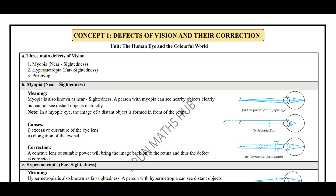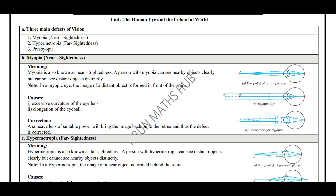Myopia is nearsightedness; hypermetropia is farsightedness. Presbyopia is a condition where the person will not be able to see near and far objects clearly. In detail, we will study about myopia. Myopia is also called nearsightedness — that means a person will be able to see near objects clearly but cannot see distant objects properly.